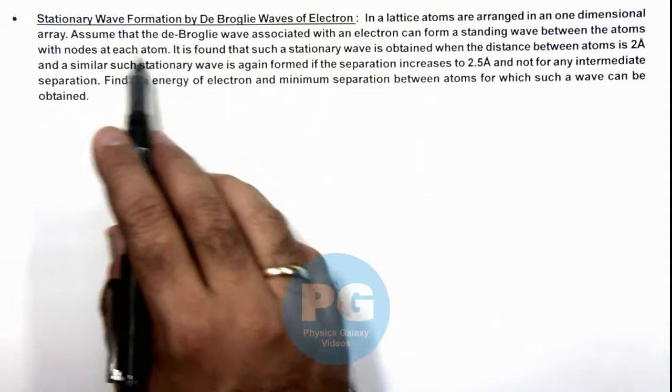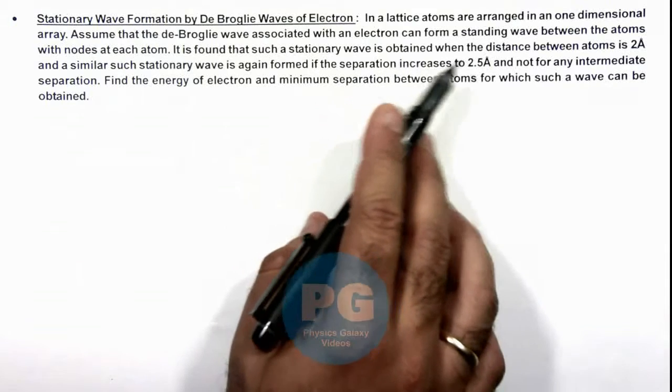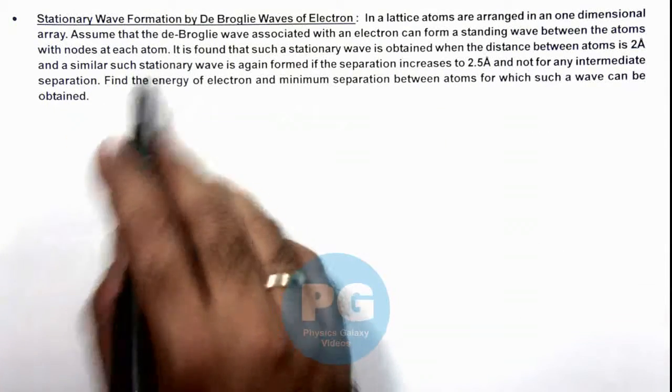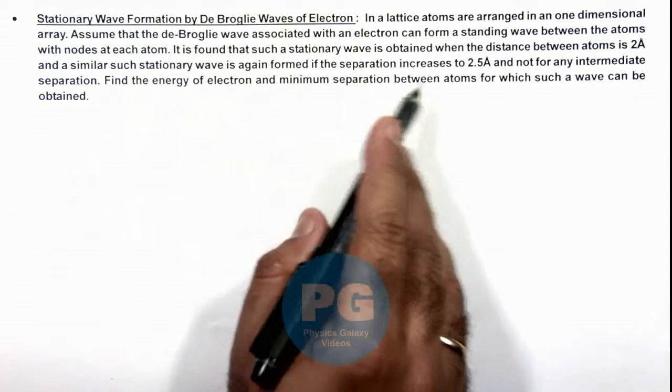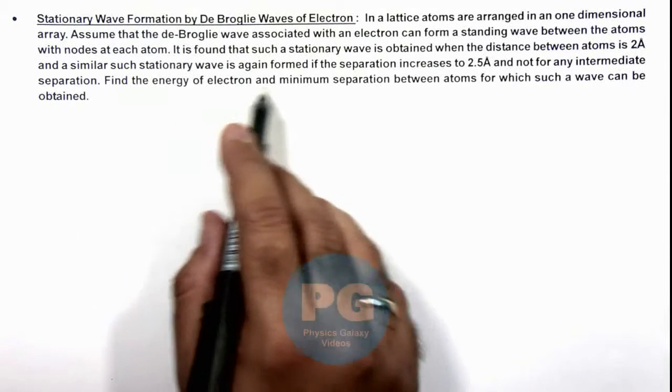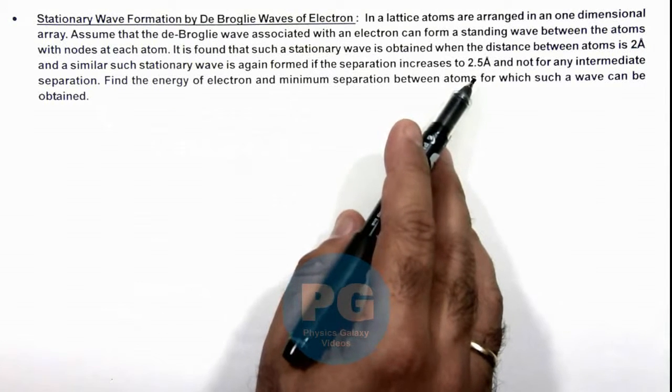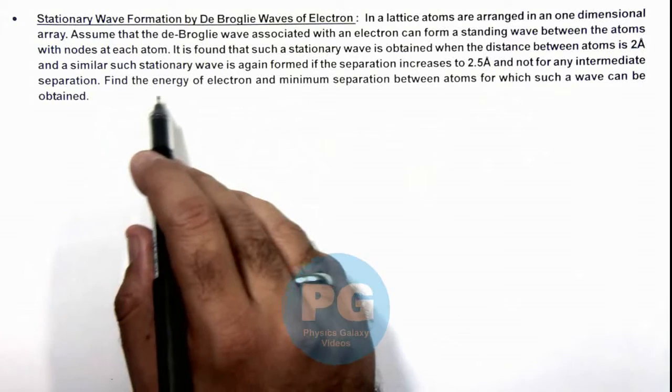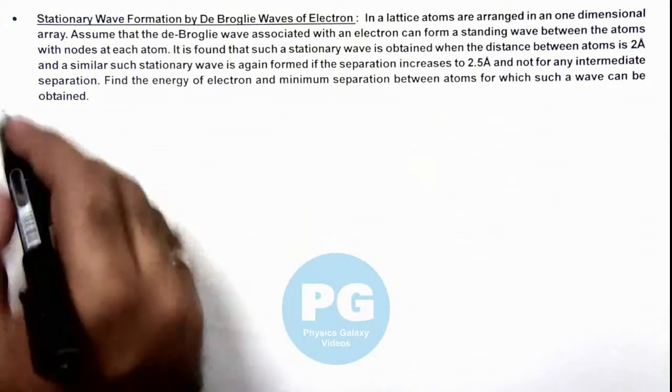We can assume that the de Broglie wave associated with an electron can form a standing wave between the atoms with nodes at each atom. It is found that such a stationary wave is obtained when the distance between atoms is 2 angstrom, and a similar wave is again found when it increases to 2.5 angstrom, but not for any intermediate separation. We are required to find the energy of the electron at minimum separation between atoms for which the wave can be obtained.